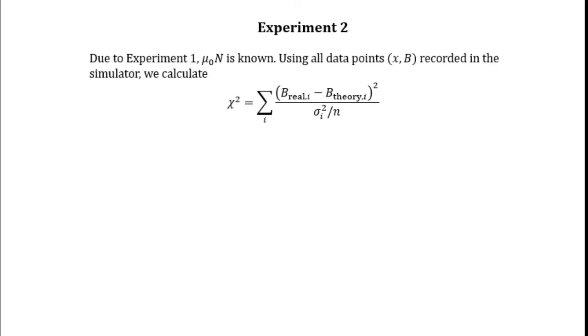By using all data points x and B recorded in the simulator, we calculate the value of chi-squared. B theory is obtained by using the formula given in the previous slide.